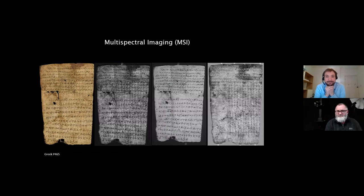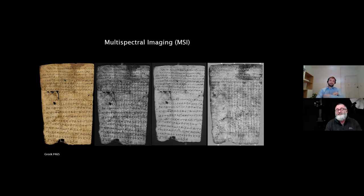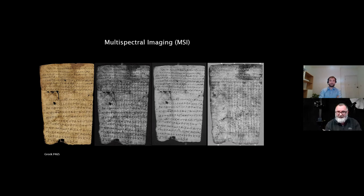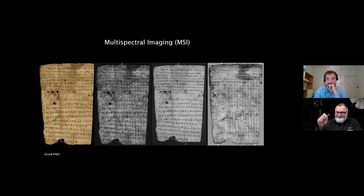In the heritage sector, multispectral imaging is used mostly for palimpsests — where writing material such as parchment has been cleaned and reused. Here is Greek papyri 465. From left: the standard image as seen with the naked eye; the UV image at 370 nanometers where you can see both texts clearly; then the infrared image where the undertext has almost disappeared and you can just see the overtext; and through further processing, differentiating pixels to make out the undertext while not showing the overtext. This was one of our very first experiments, about ten years ago.